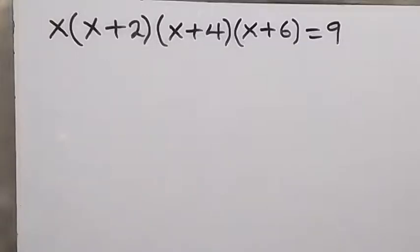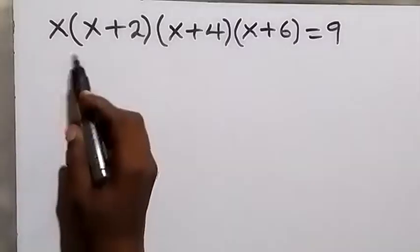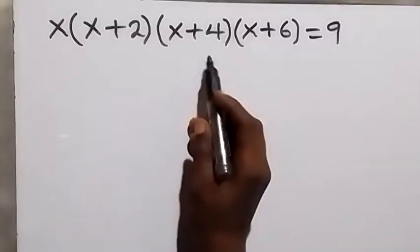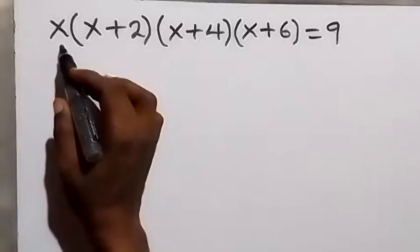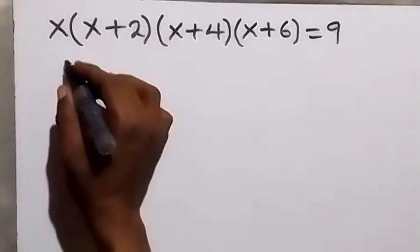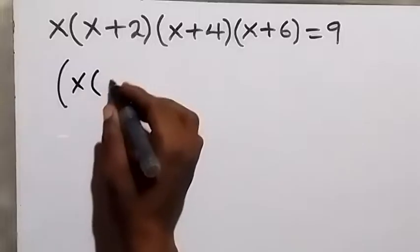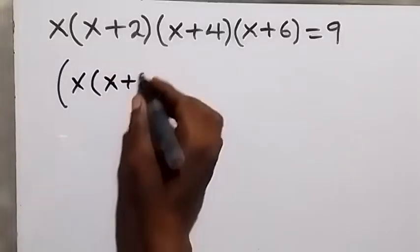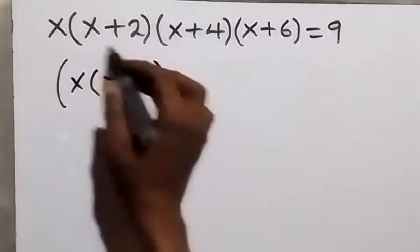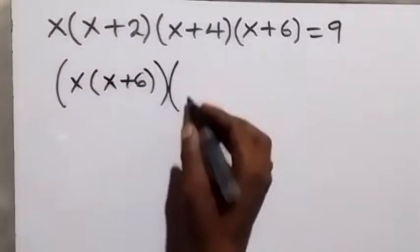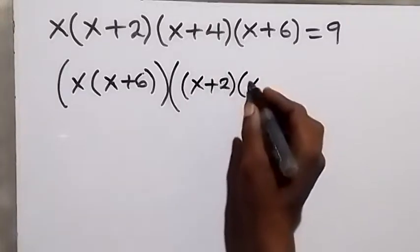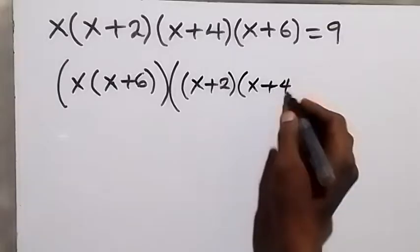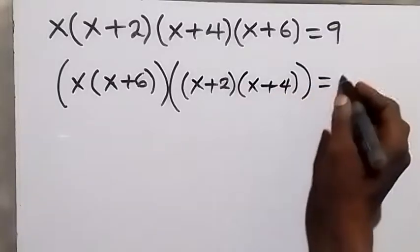Hello, you are welcome. How to solve this problem: x into bracket (x plus 2) into bracket (x plus 4) into bracket (x plus 6) equals 9. From here, let's rearrange this. We take x and x plus 6 together, and also we bring x plus 2 and x plus 4 together, so we have x multiplied by (x plus 6) and (x plus 2) multiplied by (x plus 4), which equals 9.